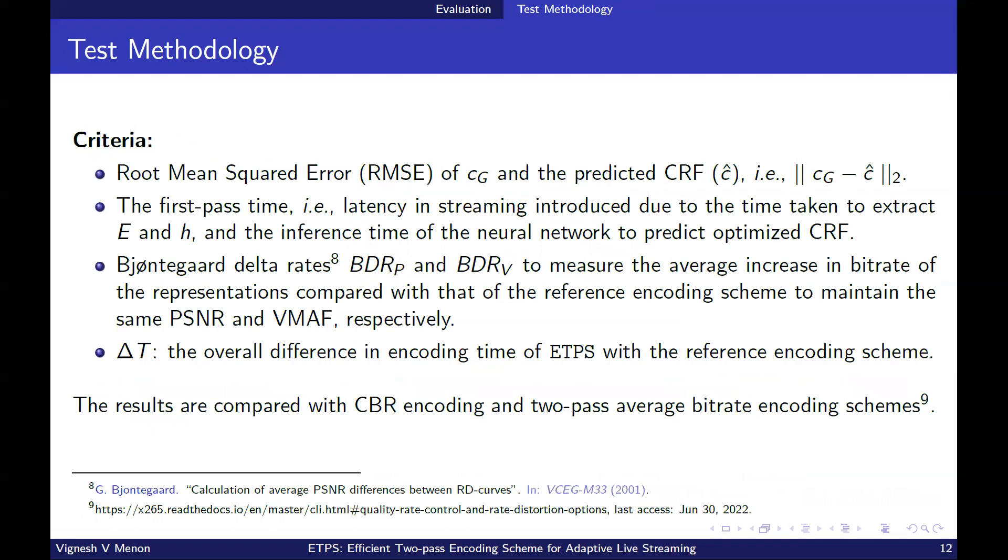Firstly, the prediction accuracy of the CRF prediction is evaluated. The optimal CRF as a ground truth CRF CG is determined manually using a brute force approach for each target bitrate for every video which is used as the ground truth. The accuracy of the CRF prediction algorithm is determined by the RMSE of this ground truth and the predicted CRF. Secondly, the first pass time, that is the latency in streaming introduced due to the time taken to extract the features and inference time of the neural network to predict the optimized CRF, is determined. Furthermore, the resulting overall quality in PSNR and VMAF and the achieved bitrate are compared for each sequence. The results are compared with CBR encoding and two-pass ABR encoding schemes.